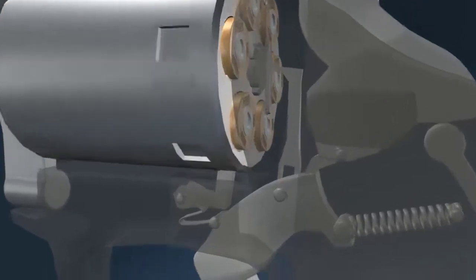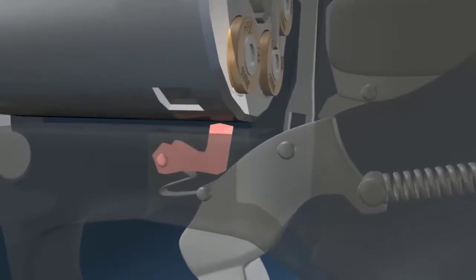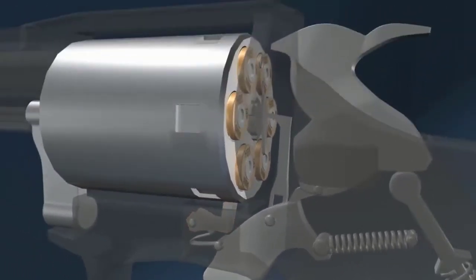Another pawl lodges in a small depression on the cylinder. This stops the cylinder in a particular position so it is perfectly lined up with the barrel.